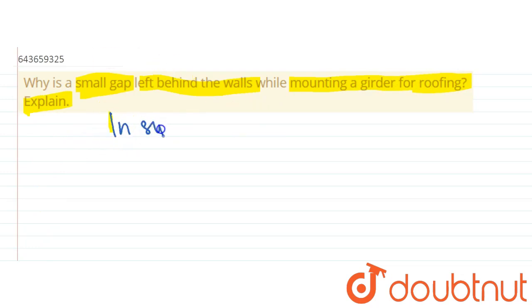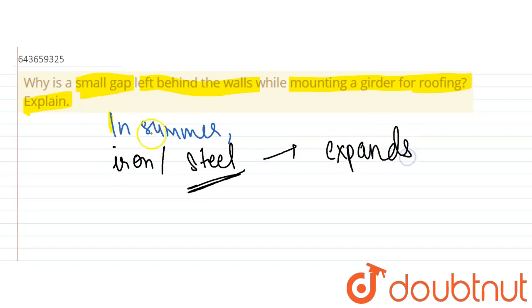In summer, what generally happens is the girders are made up of iron or steel. They are generally made up of steel, so it expands in summer. So for the expansion, we left the small gap behind the wall.